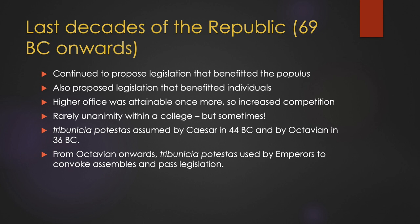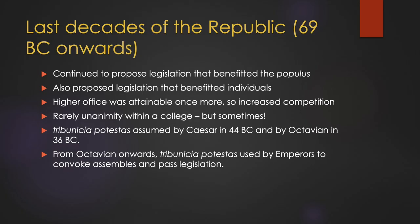Now that they could obtain higher offices following their Tribunate, just like any other magistracy, competition once more increased. Because of this increased competition, it is rare that we see unanimity within the College of Ten Tribunes. For example, in 67 BC, the Tribune Trebellius was threatened with removal from office when he tried to speak over the Tribune Gabinius, who was proposing Pompey's extraordinary command.